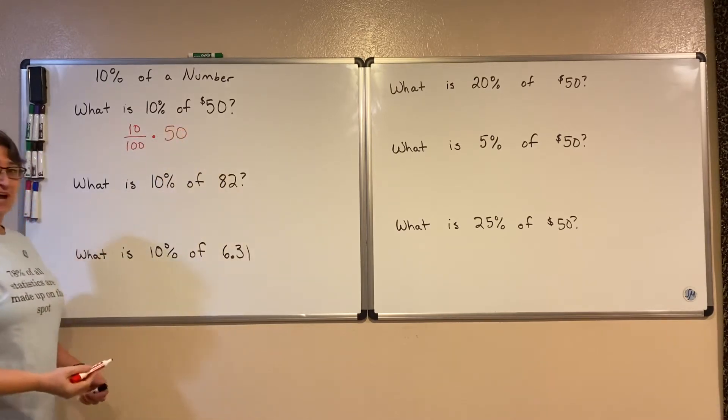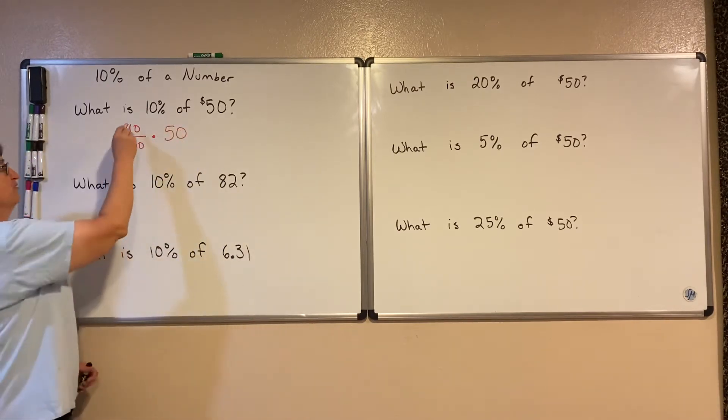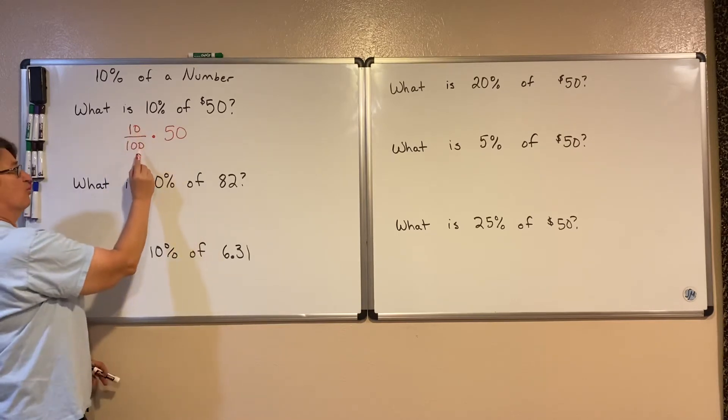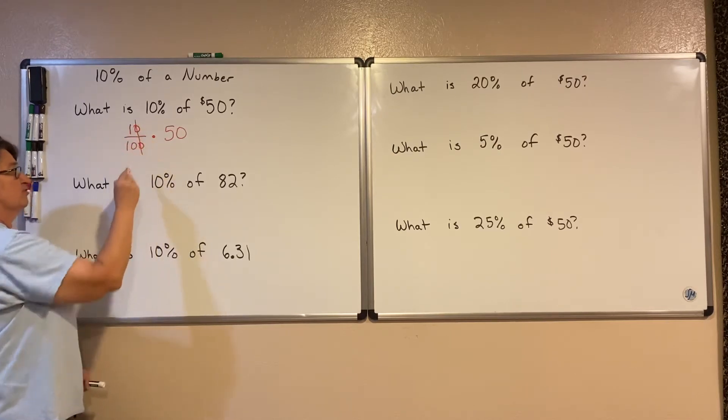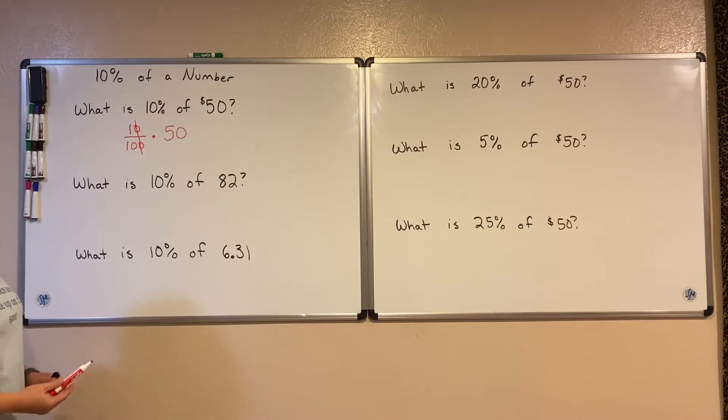We can simplify a little before we begin to multiply. So for instance, this 10 over 100, divide the top and the bottom by 10. So you get 1/10 is the same as 10 over 100.